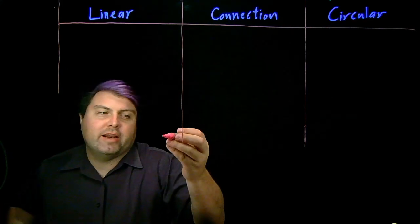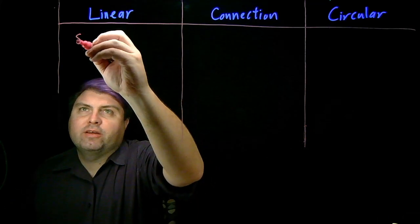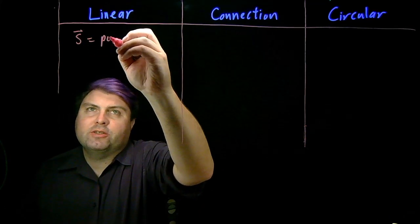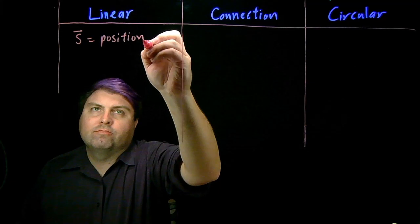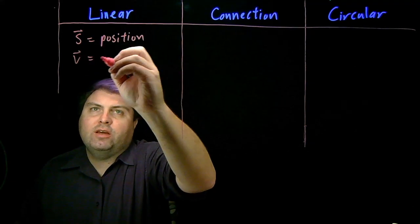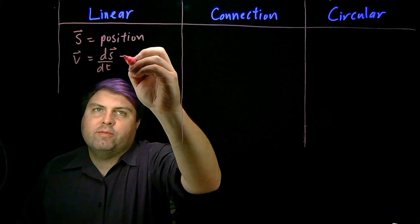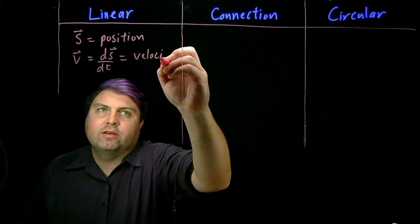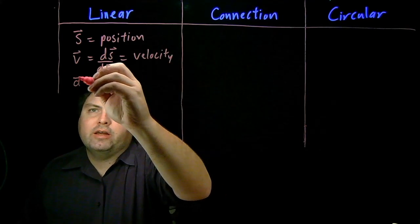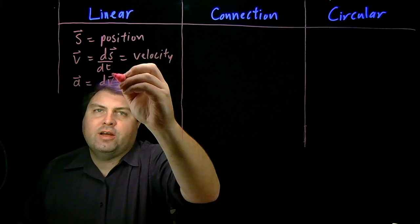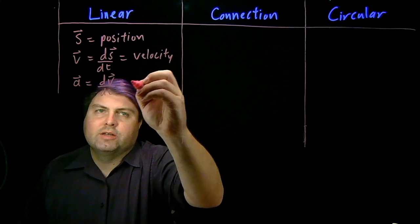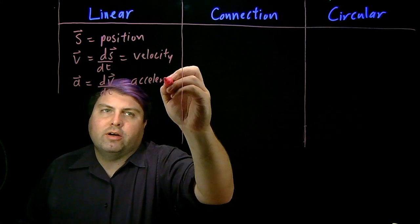So in linear kinematics, our definitions that we've started with is that s is position, v is the derivative of position with respect to time, we call that the velocity, and a, the derivative of velocity with respect to time, we call the acceleration.